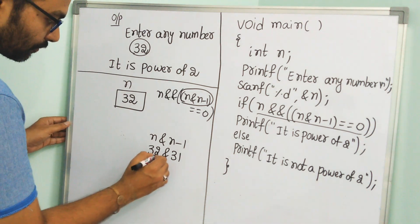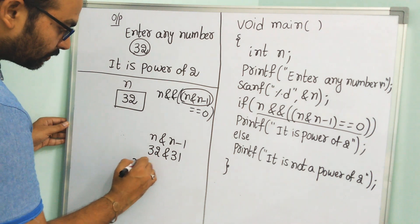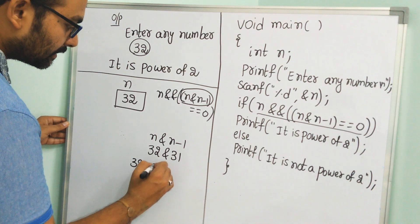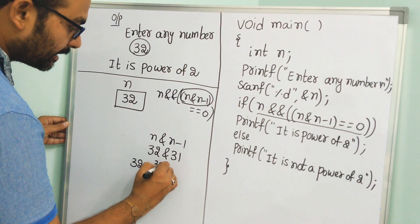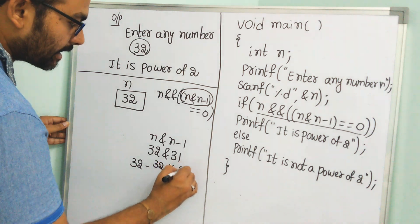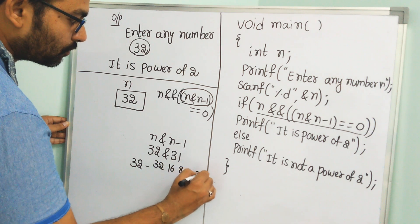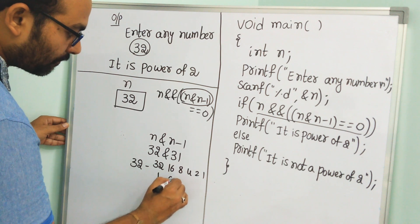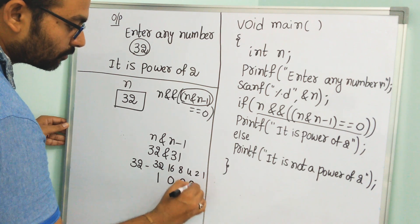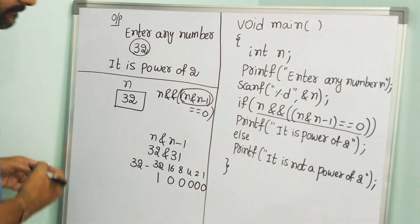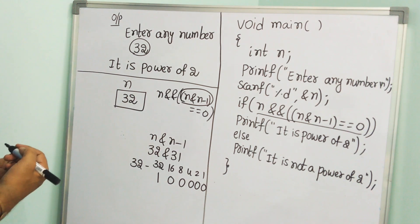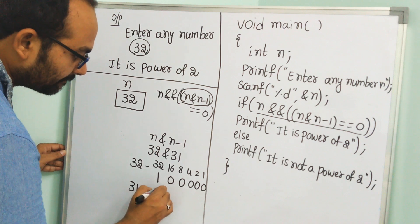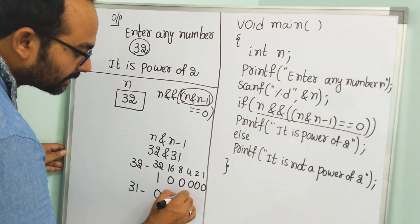Consider 32 and its binary representation. According to place values 32, 16, 8, 4, 2, 1 — 32 can be represented as 1 followed by 5 zeros. Similarly, 31 can be represented in binary as well.